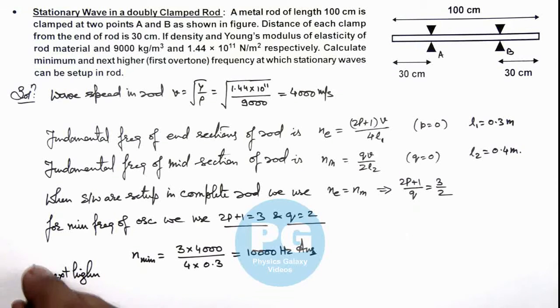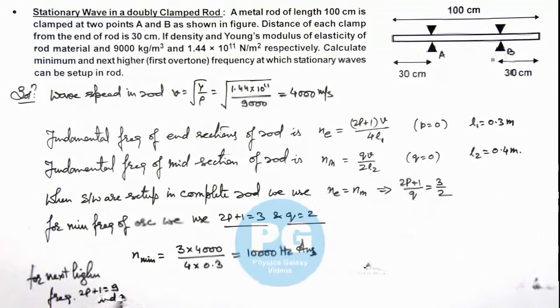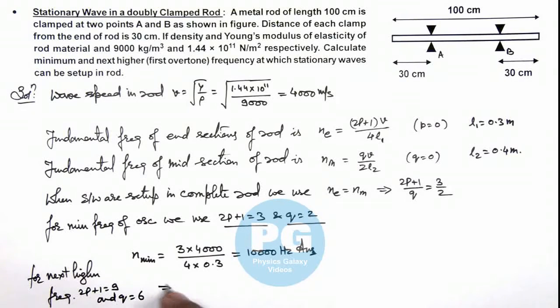For next higher frequency, here we can write 2p + 1 should be equal to 9, and q should be equal to 6, which implies the next frequency at which this will happen. This will give us 9 times—if we calculate here, if multiplied by 9, this is 9 × 4000 divided by 4 × 0.3, that gives us 30,000 hertz. That is the next higher frequency at which stationary waves will set up—the result of this problem.